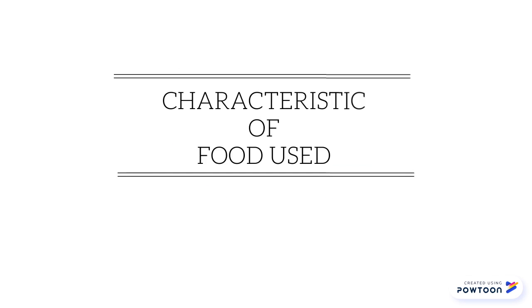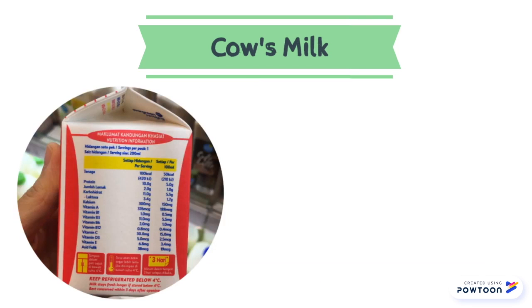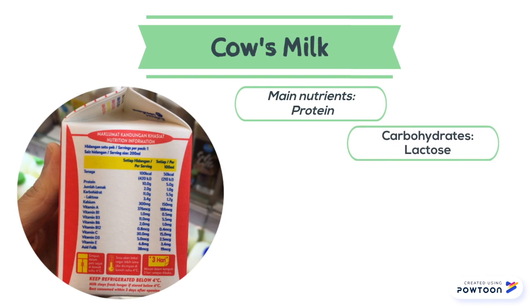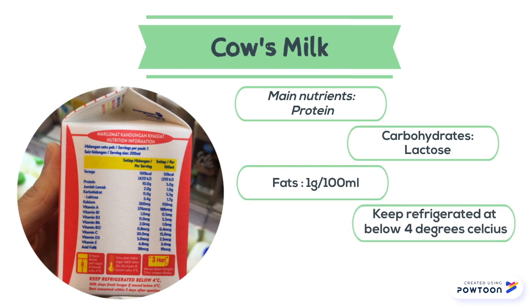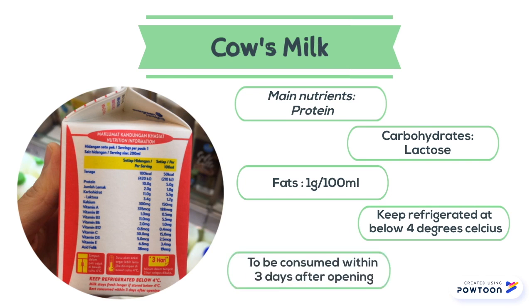Each of the food products used has their own unique characteristics. For cow's milk, we have chosen this low fat milk product. The main nutrients are protein and carbohydrate. The carbohydrates are mostly made out of lactose and the fat content is only 1g per 100ml. It is to be kept refrigerated at below 4 degrees Celsius and is supposed to be consumed within 3 days after opening.